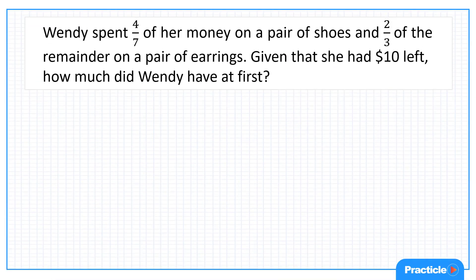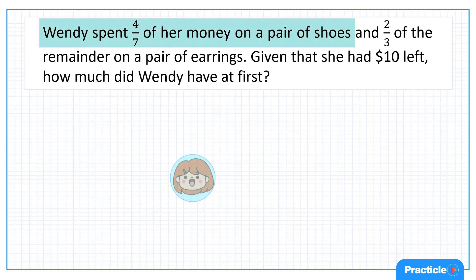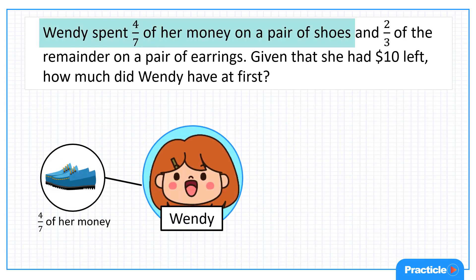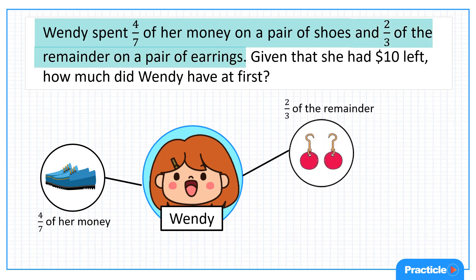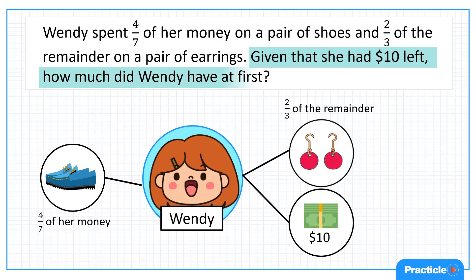Here's an example of a remainder concept question. Let's read this together. Wendy spent 4/7 of her money on a pair of shoes and two-thirds of the remainder on a pair of earrings. Given that she had $10 left, how much did Wendy have at first?